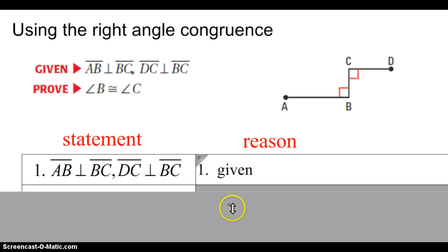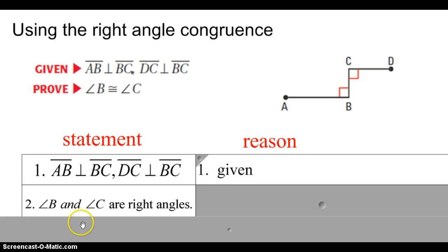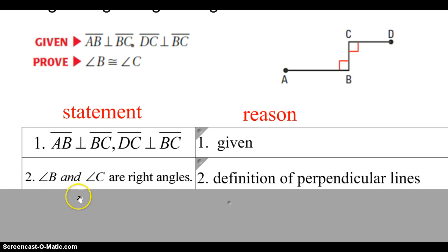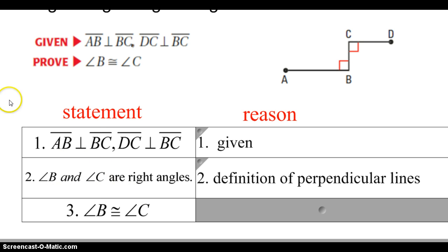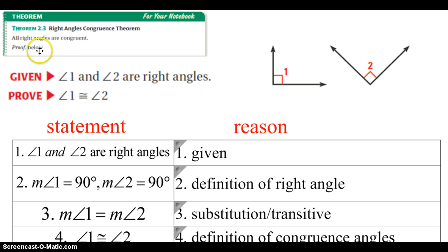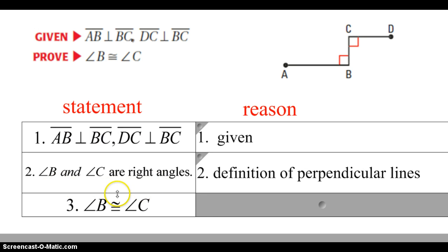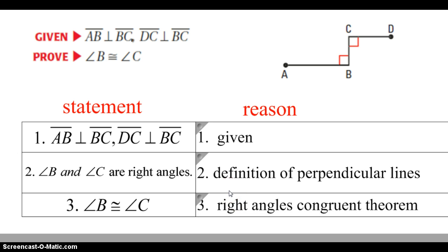They're perpendicular — that's my given. Second step: I just tell you B and C are right angles. I'm just taking what it says and putting it in a different language, so that's the definition of perpendicular lines. And then lastly, I tell you they're right angles. By the theorem we just proved, all right angles are congruent, so since B and C are right angles, B must be congruent to C. That is using the right angles congruent theorem. We proved it, and now we can use it from here on out.